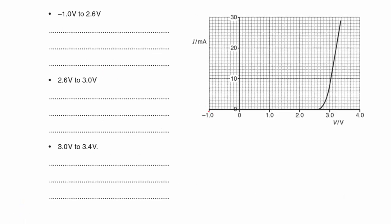The first section is between minus 1 volts and 2.6 volts. So that's this region here, and what we can see is as V increases, no current flows, so the resistance is infinite.